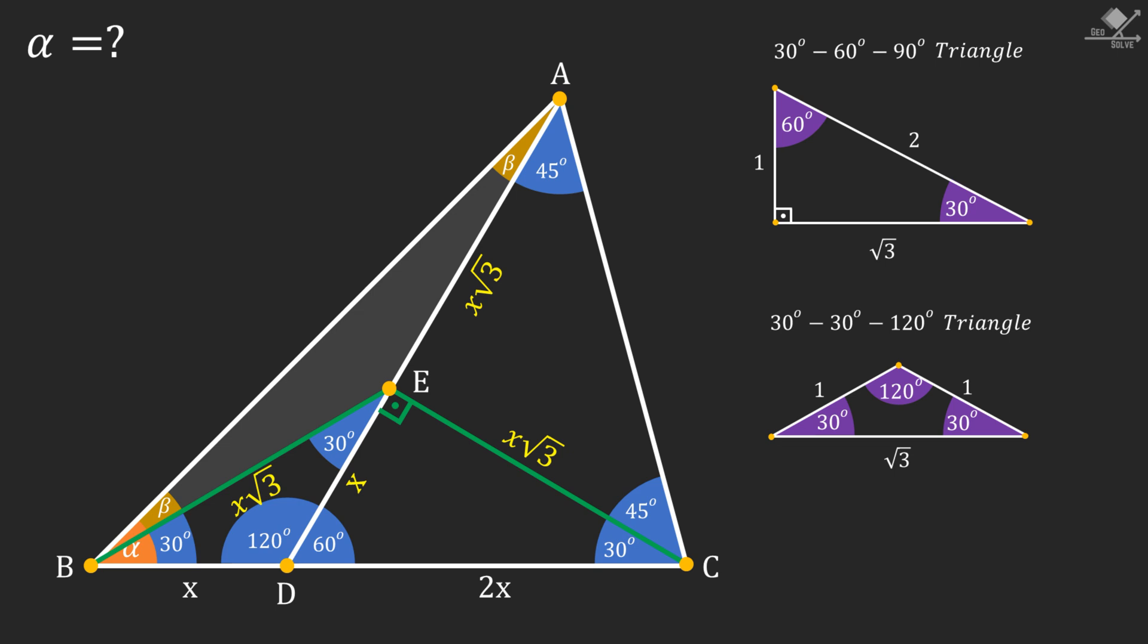Using exterior angle theorem, we can write 2 beta equals 30 degrees. From here beta will be 15 degrees. And finally alpha can be calculated as 15 plus 30 degrees which will be 45 degrees.